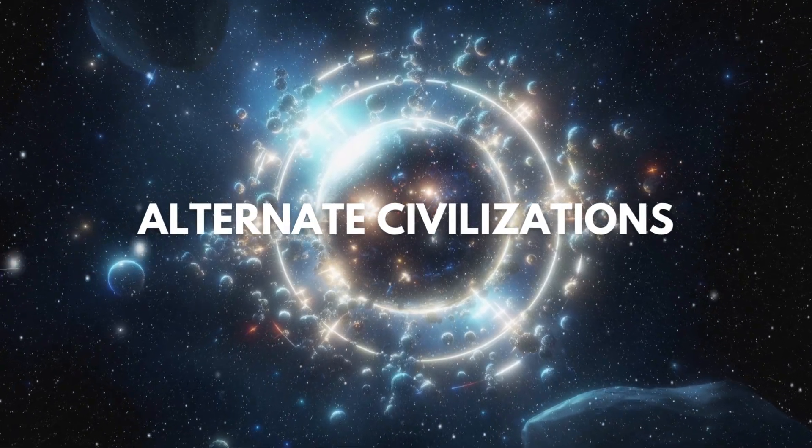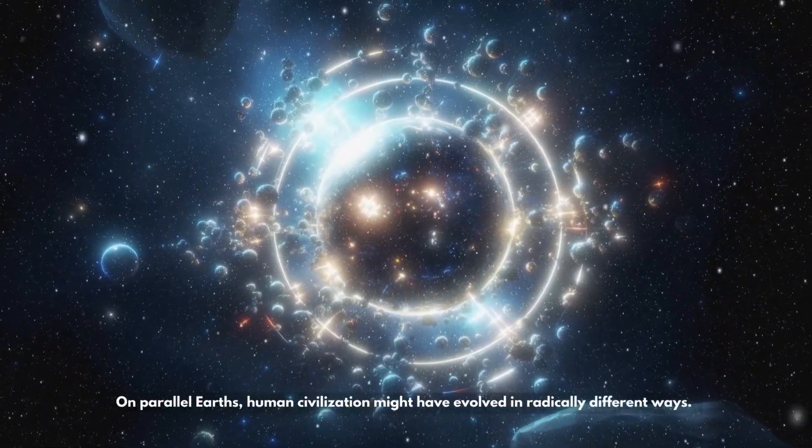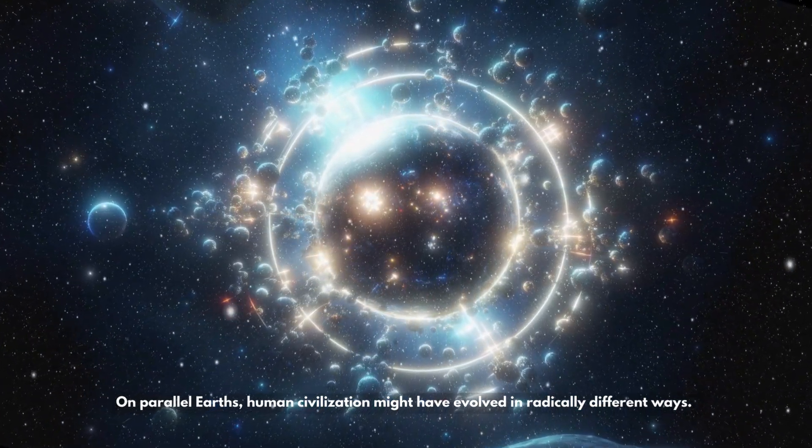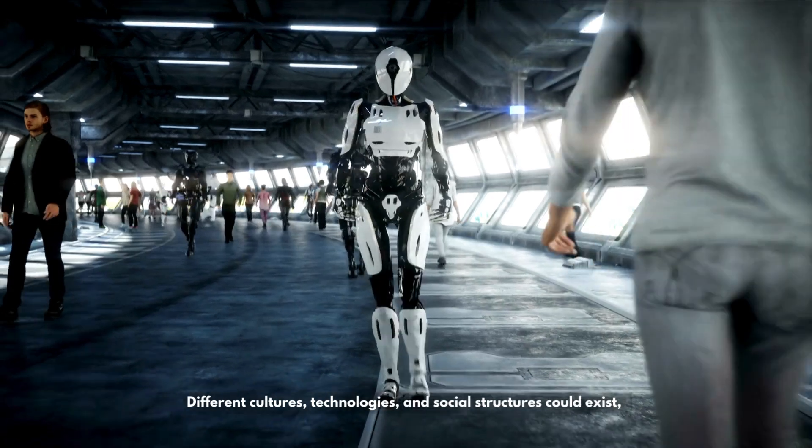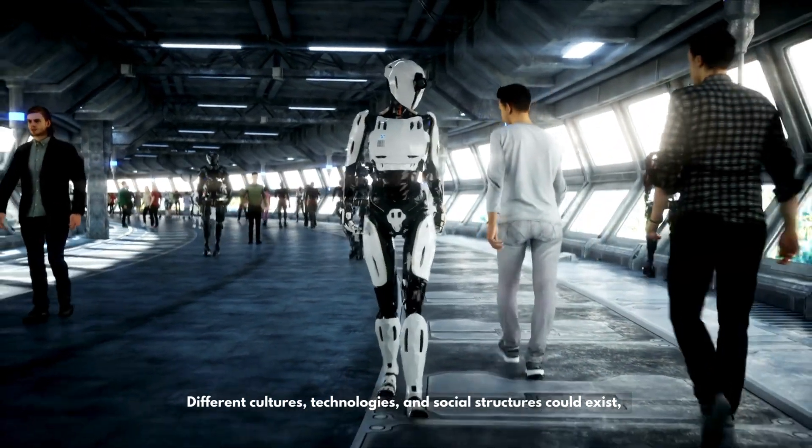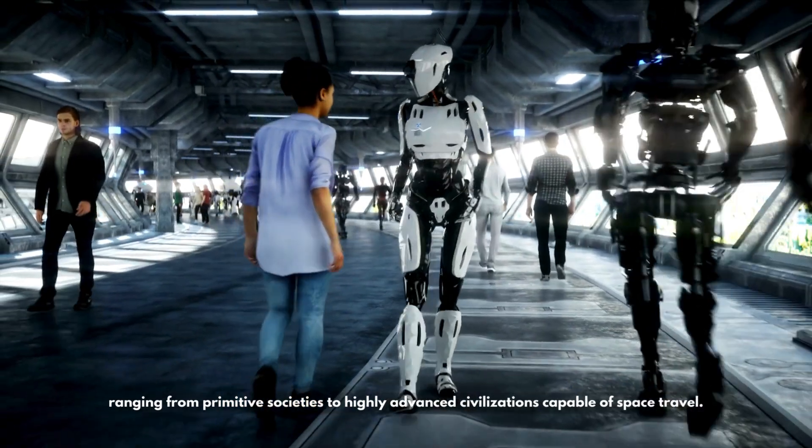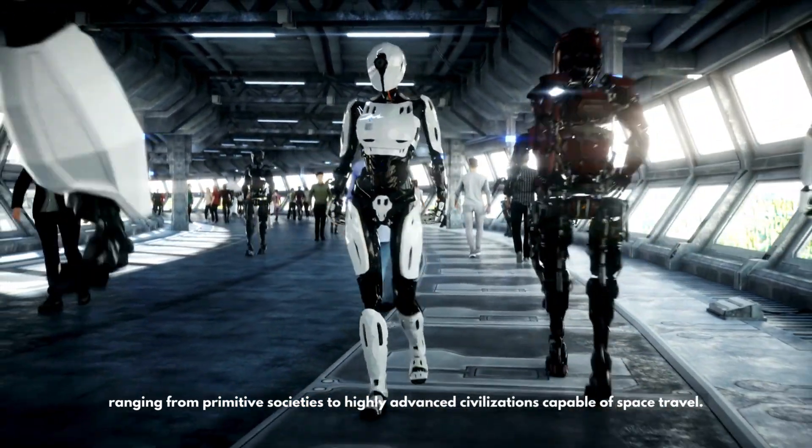Alternate civilizations: On parallel Earths, human civilization might have evolved in radically different ways. Different cultures, technologies, and social structures could exist, ranging from primitive societies to highly advanced civilizations capable of space travel.